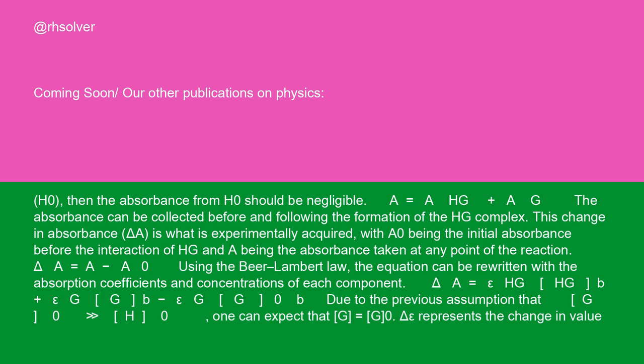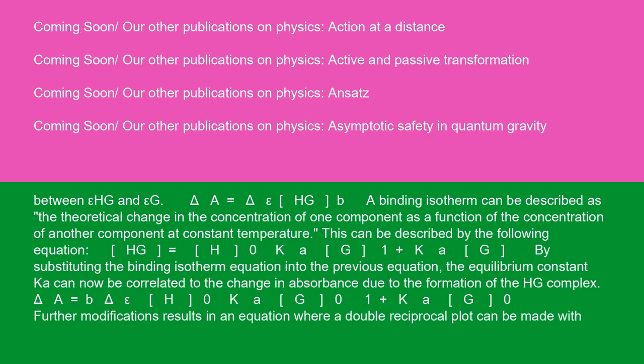One can expect that G equals G0. Delta epsilon represents the change in value between epsilon HG and epsilon G. Delta A equals delta epsilon times HG times b. A binding isotherm can be described as the theoretical change in the concentration of one component as a function of the concentration of another component at constant temperature.